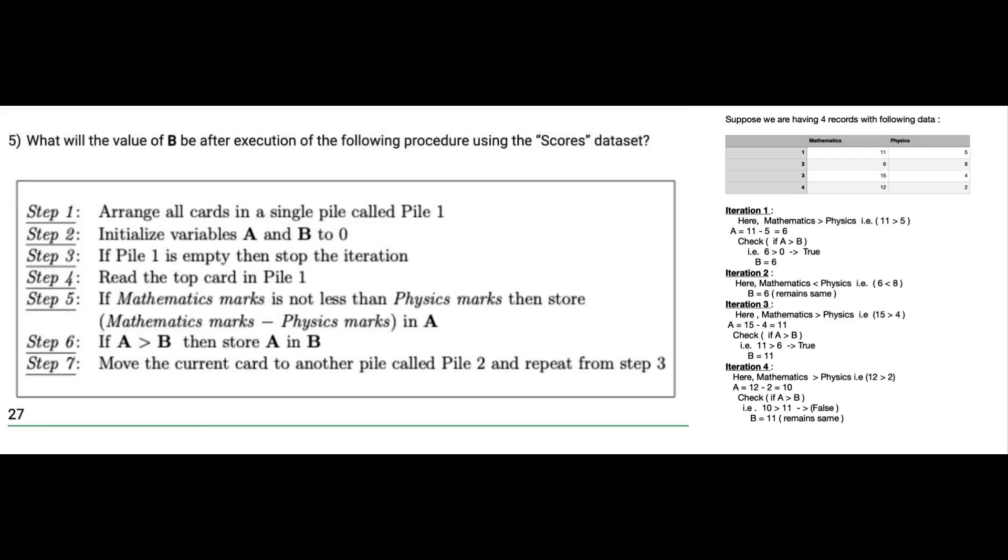Now in the last iteration, 12 is greater than 2, which is true, so their difference, which is 10, is stored in A. Now in the next condition, we have to check whether A is greater than B. Initially, the value of B is 11, which we have got from the third iteration.